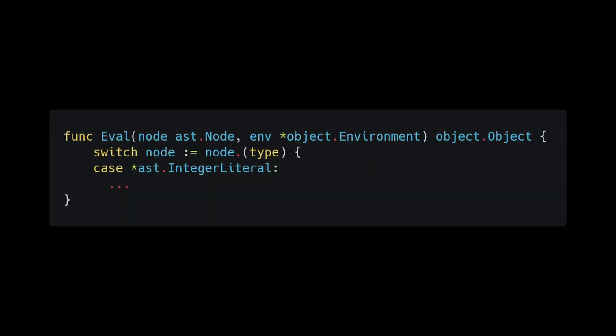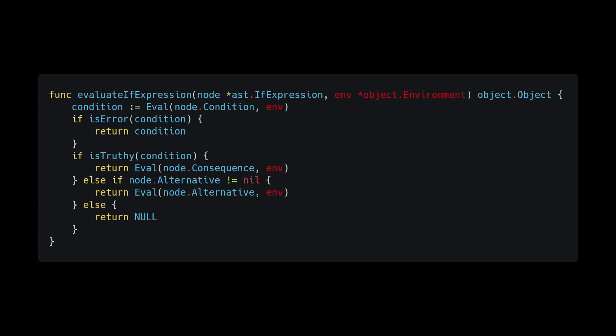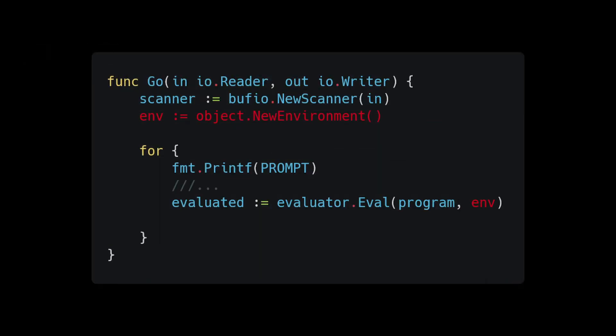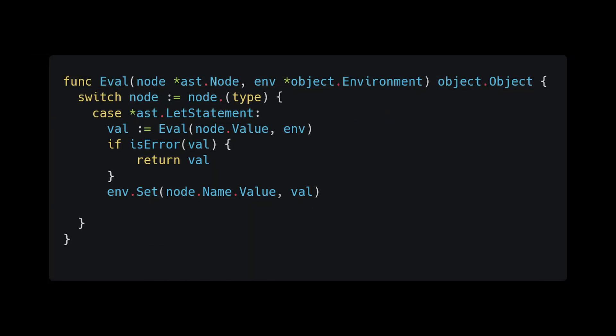Include the environment as a parameter to the top level eval function — this will break a lot of things, so update all method headers that are broken and pass in an environment parameter. Just use the environment being passed in at the top level eval function. Also remember to update our console package so it creates a new environment and passes it into the eval function. With that in place, update the switch case for the let statement: after evaluating the value, store it in our env with a call to set.